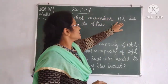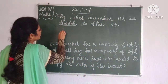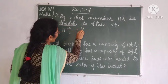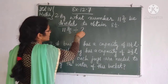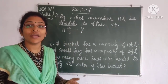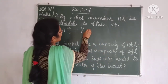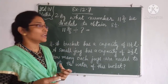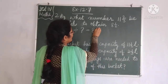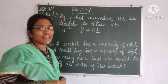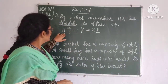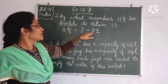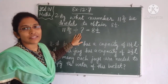Which number is divided? 11 and 2/3 is divided by what number — we don't know by which number. And 'to obtain' means what we are getting, which is 8 and 1/2. So the dividend is given, the quotient is given, and the divisor is missing.